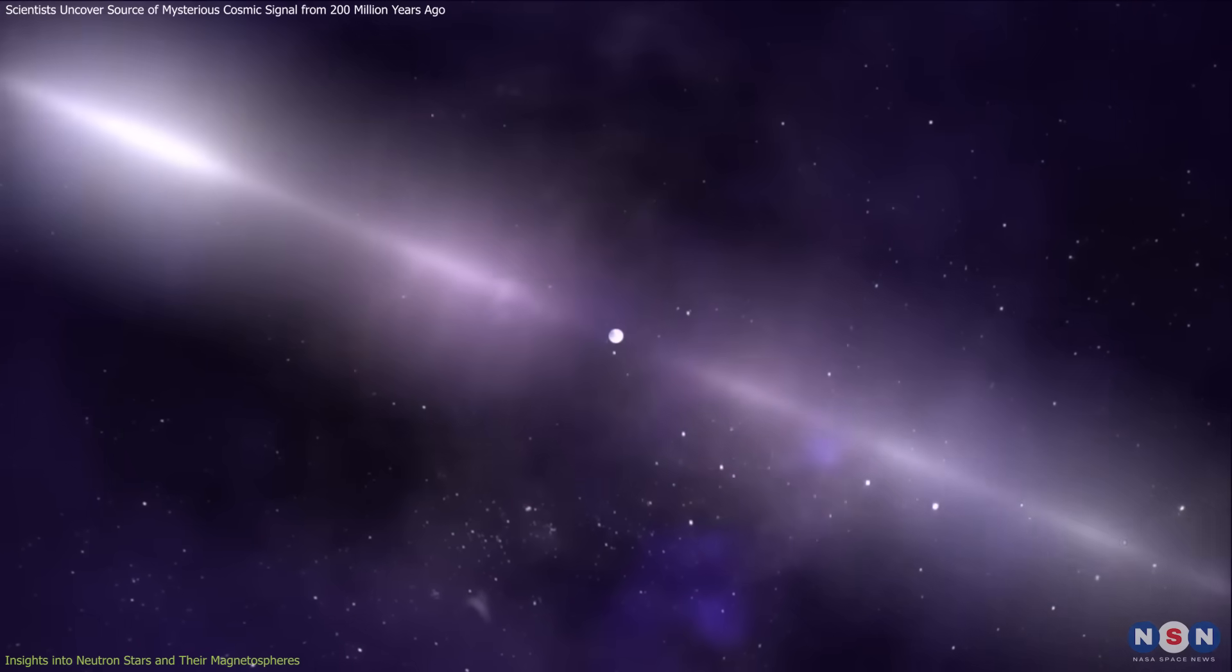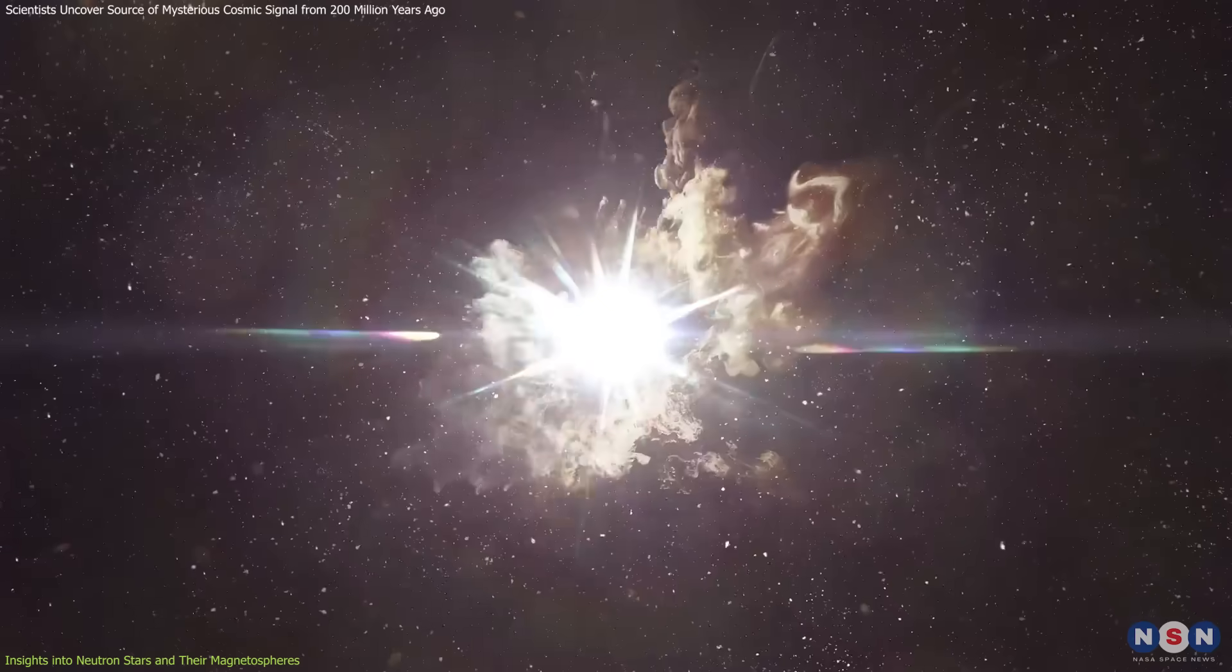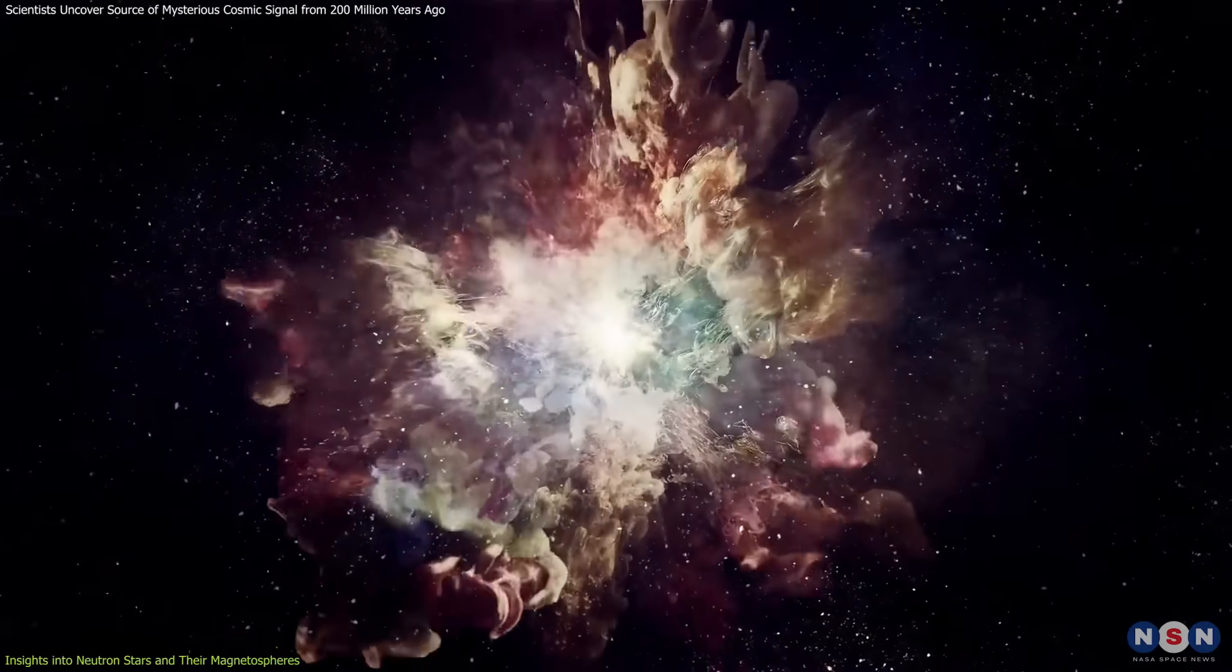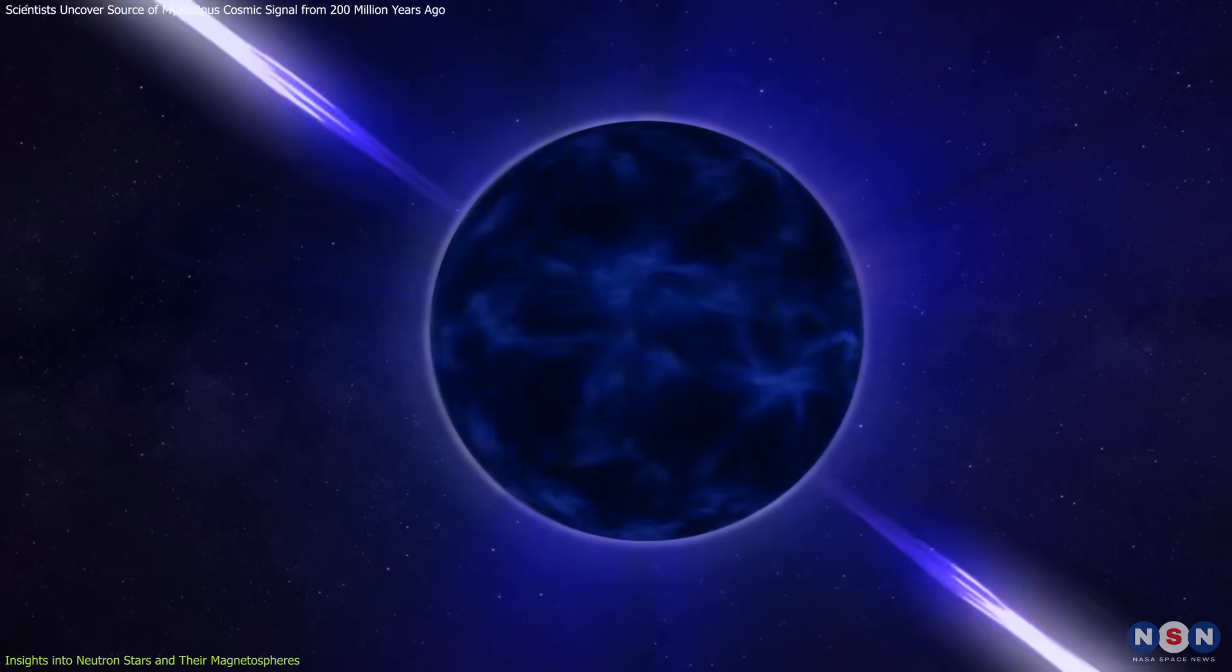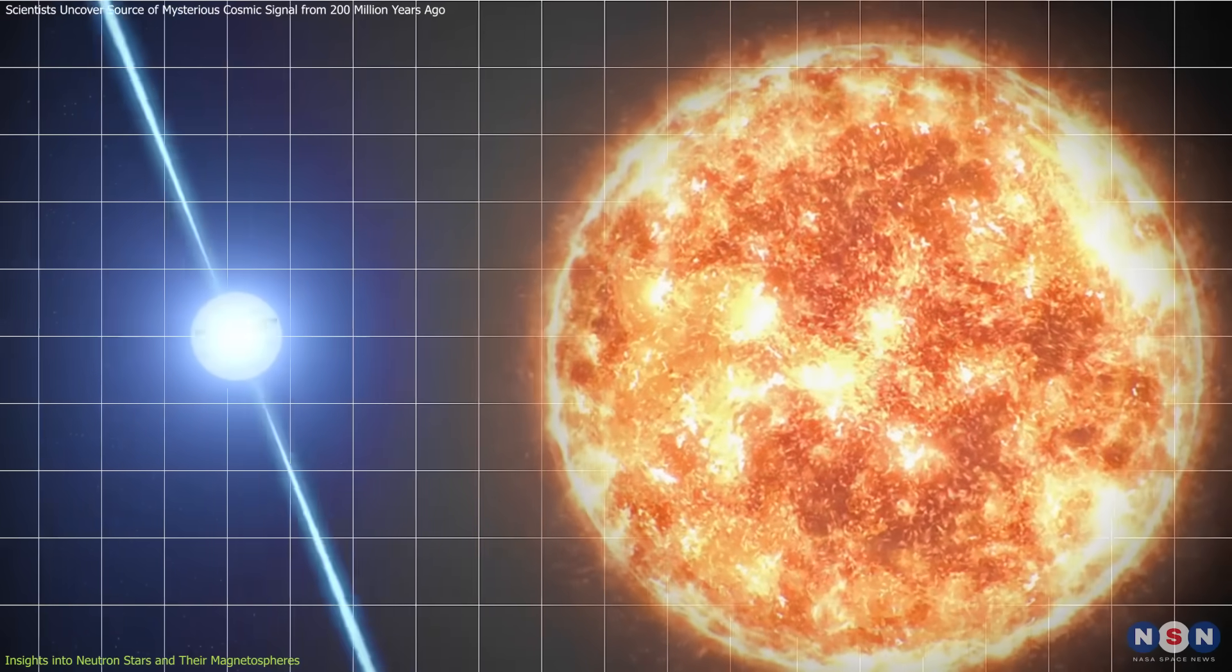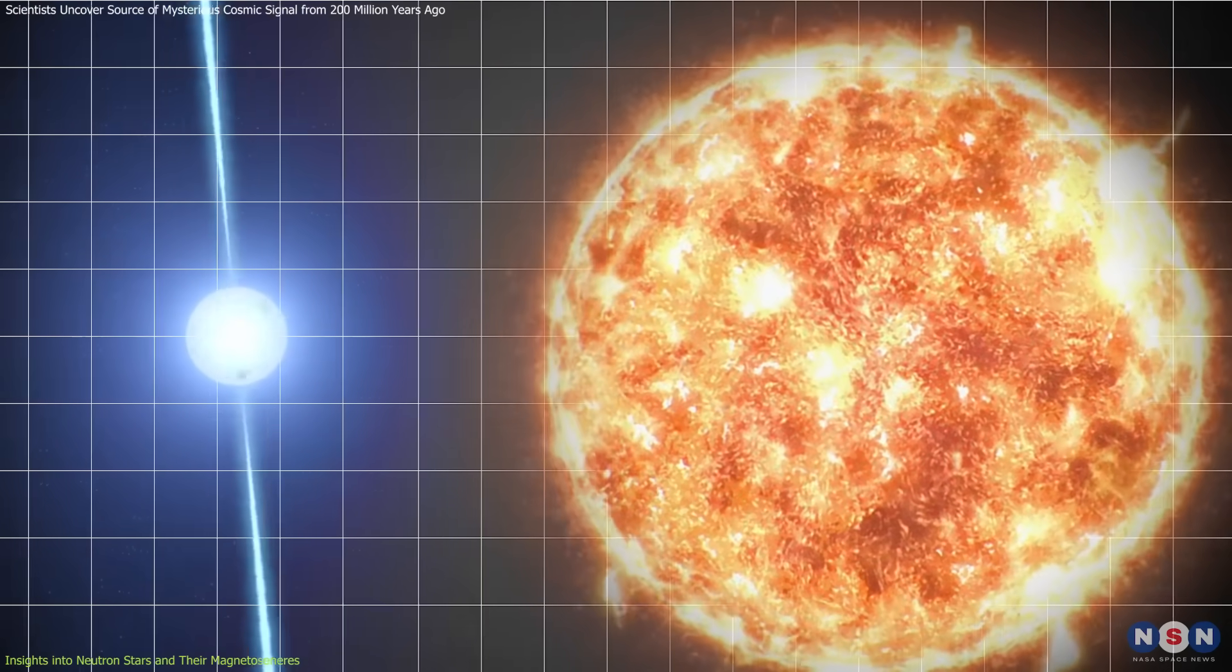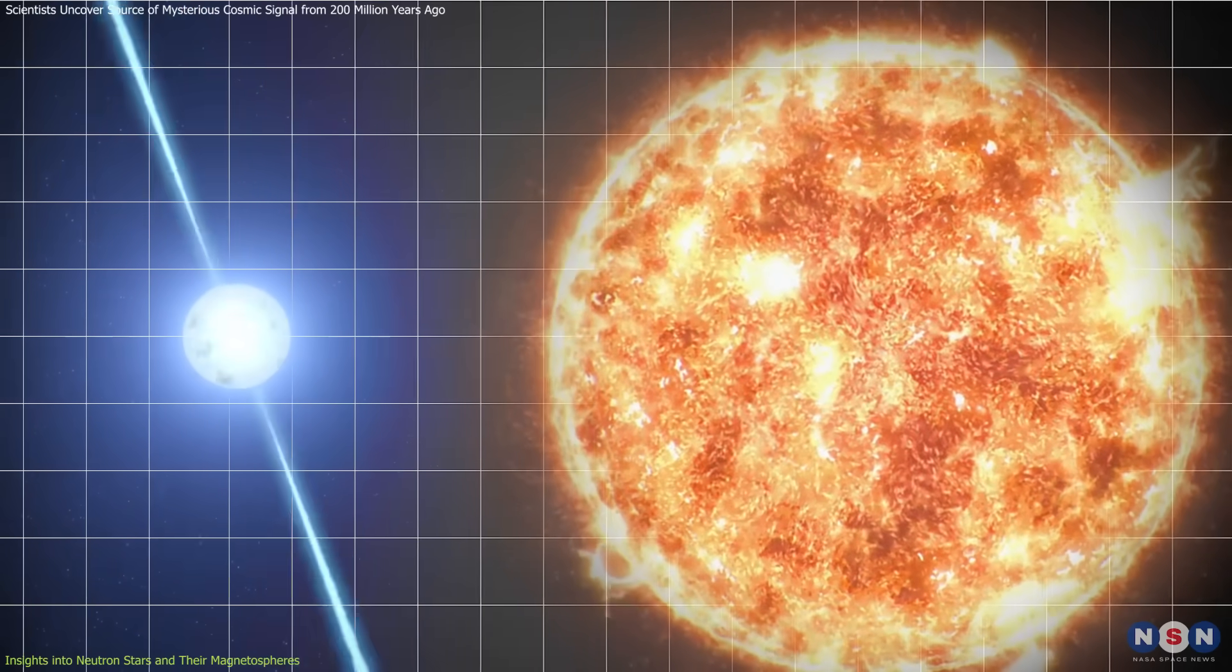Neutron stars are among the universe's most fascinating objects. Formed from the remnants of massive stars that have exploded in supernovae, these celestial bodies pack an extraordinary amount of mass into a tiny volume. A neutron star can be just 20 kilometers in diameter, but contain more mass than our sun, making them unimaginably dense.